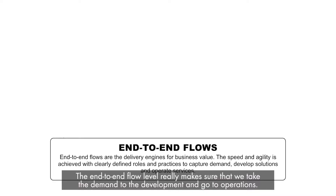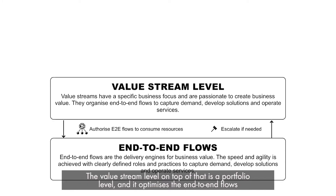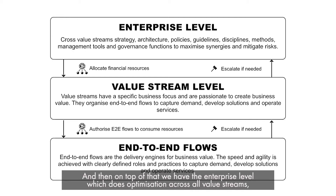The end-to-end flow level really makes sure that we take the demand to the development and go to operations. The value stream level on top of that is a portfolio level, and it optimizes the end-to-end flows from a certain business perspective. And then on top of that we have the enterprise level, which does an optimization across all the value streams, giving guidance, instructions, and principles for all value streams and all end-to-end flows.